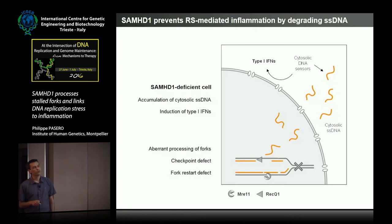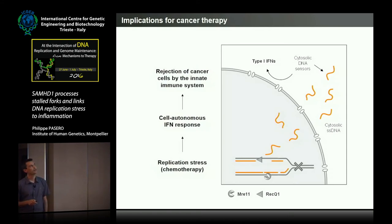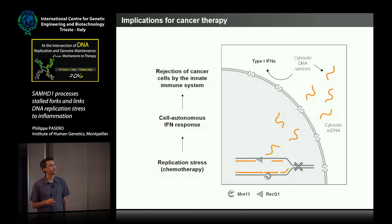This is also important in terms of cancer treatment, because if we could manipulate this response to chemotherapeutic agents — for instance by forcing the cells to produce more of this DNA — we could favor the rejection of cancer cells by the innate immune response, because we know that the type 1 interferon response is linked to the production of ligands at the cell surface that are detected by NK cells. So maybe that's a strategy for the future.